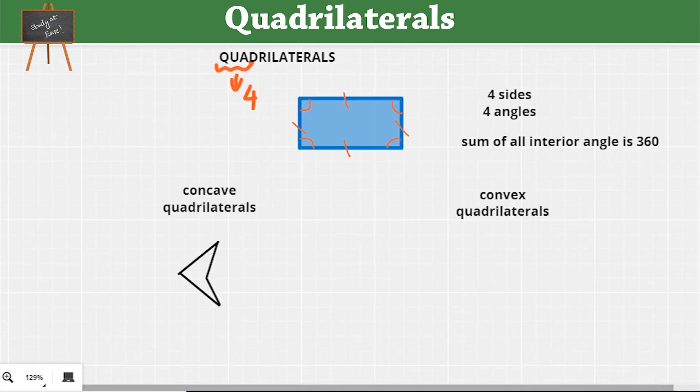Quadrilaterals can be subdivided based on their properties. One concave quadrilateral. In a concave quadrilateral, one of the angle, as you see in the figure, one of the angle will be more than 180 degrees.